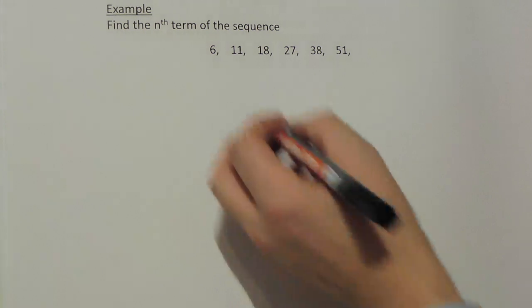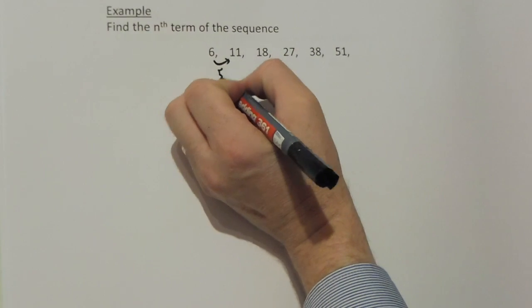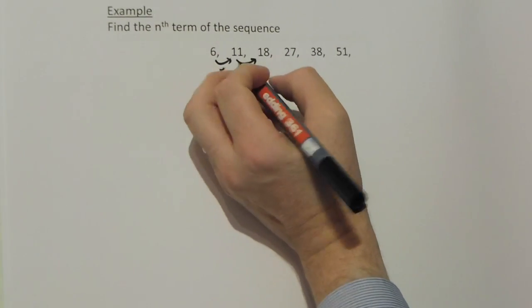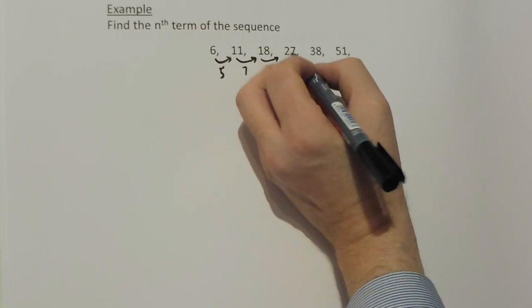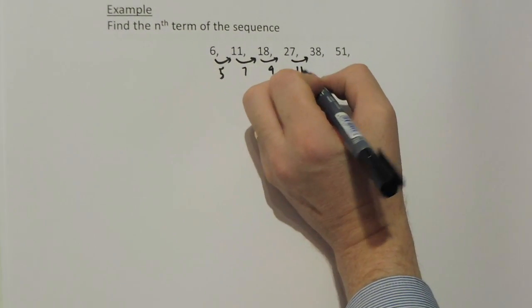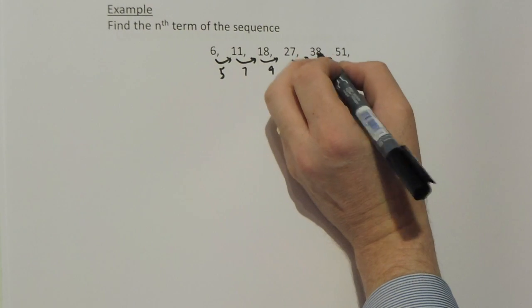Here we have a sequence which I can see goes up by 5, then it goes up by 7, then it goes up by 9, then it goes up by 11, and then it goes up by 13.